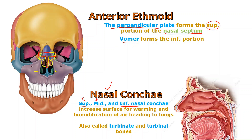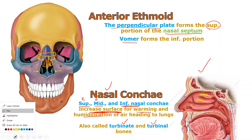What are the conchae for? They're also called turbinates or turbinal bones depending on the book or professor, but no matter the name, they are always for increasing surface area for warming and humidifying the air as it's breathed in and sent down to the lungs. In this image, the superior nasal conchae are up here — part of the ethmoid — the middle nasal conchae are the teardrops hanging down, also part of the ethmoid. The inferior ones are their own separate pair of facial bones, but need to be discussed at the same time.